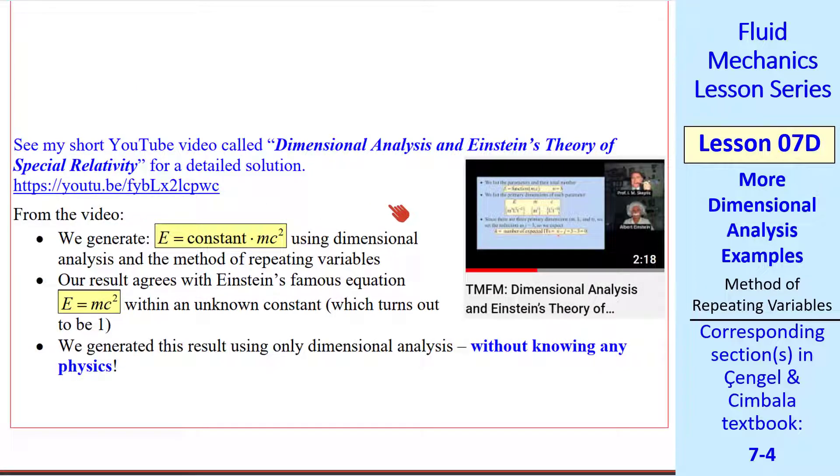Here's a link to that video. A quick summary is that we generated e equal constant times mc squared using dimensional analysis and the method of repeating variables. We can't get the constant from dimensional analysis, but you can do an experiment or some physics and find out that that constant is 1. Again, the amazing thing is that we generated this result using only dimensional analysis without knowing any physics. Any of you could have generated this in a few minutes just by dimensional analysis. You don't need to be a genius like Albert.